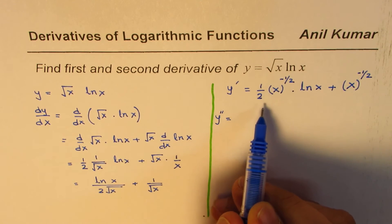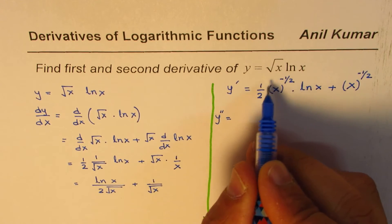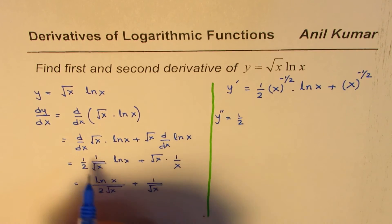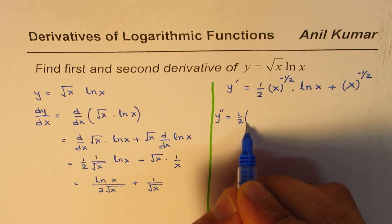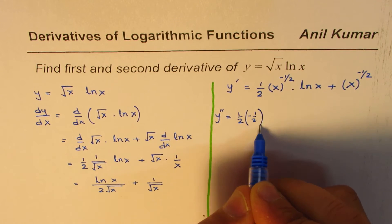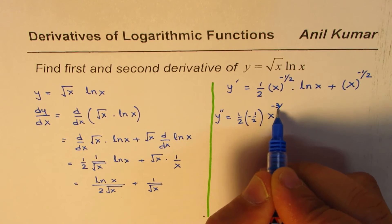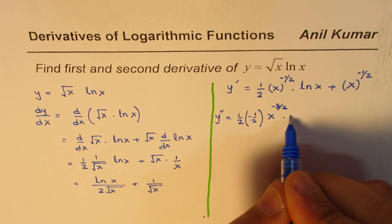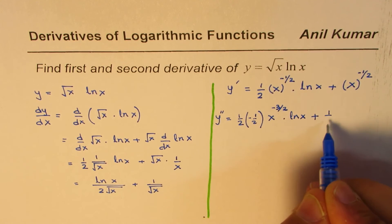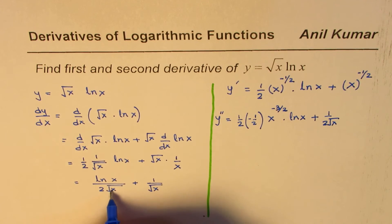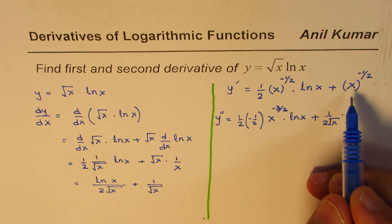The second derivative is found by differentiating this expression, where we apply the product rule. The derivative of the first part — making a shortcut — is half times minus half, times x to the power of minus three over two. That becomes the derivative of the first function, times ln x, plus the first function as written, 1 over 2 square root x, times the derivative of ln x, which is 1 over x.